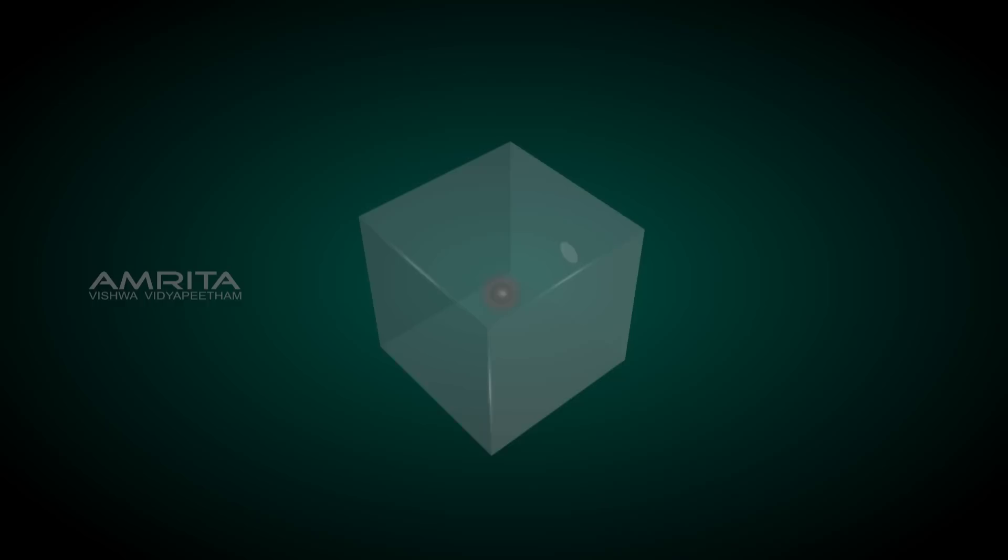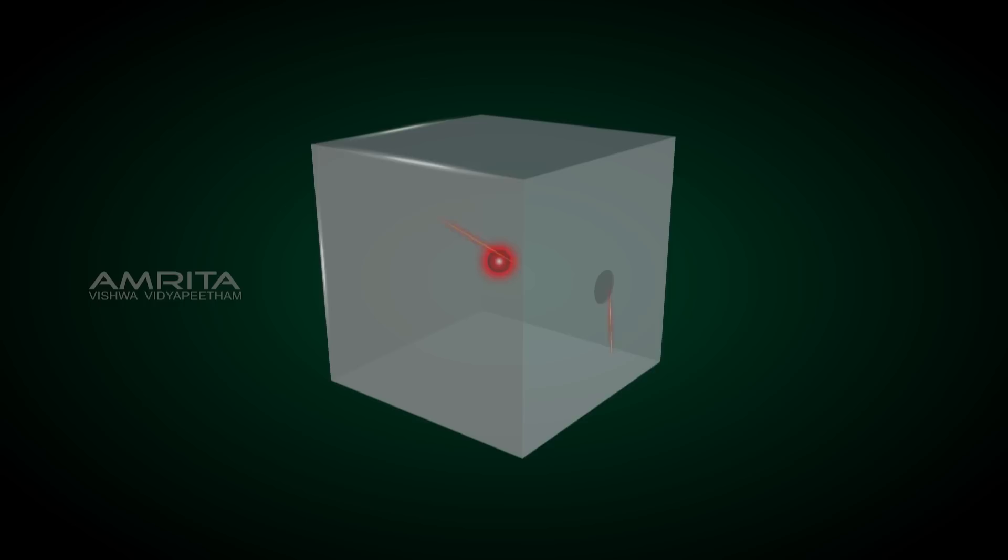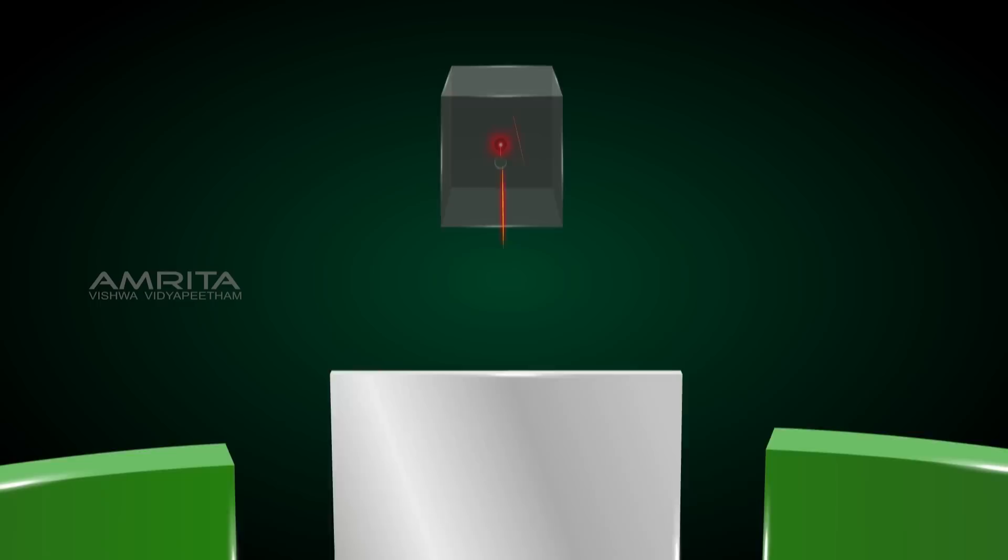In the experiment, a radioactive source of alpha particles was placed in a lead box containing a small hole. The alpha particles which hit the inside of the box were simply stopped by the box. Only those alpha particles which passed through the opening were allowed to escape and they were confined to a straight line.